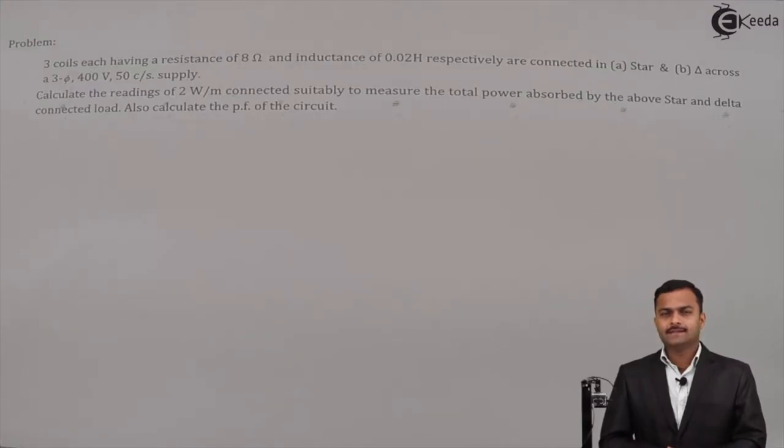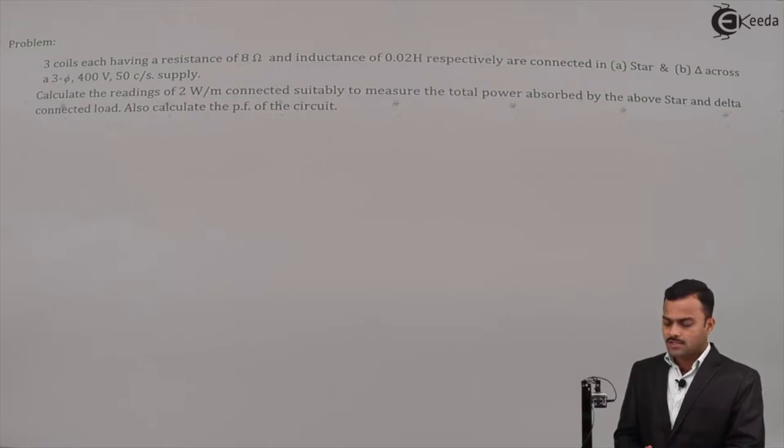Hello friends, in this video we are going to see a problem based on two wattmeter method to measure three-phase power. The statement of the problem is: three coils, each having a resistance of 8 ohms and inductance of 0.02 henry, are connected in star and delta across a three-phase supply.